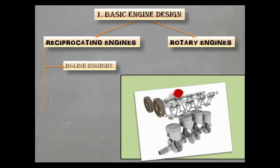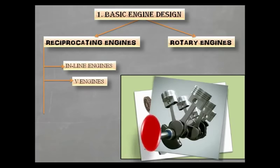Second is V engine. The difference between inline engine and V engine is that in V engine, the engine cylinders are arranged in V shape. This engine design is useful when there is vertical height constraint in engine design, that is V engine is shorter compared to inline engines. I will explain all of this in more detail in my further classes.